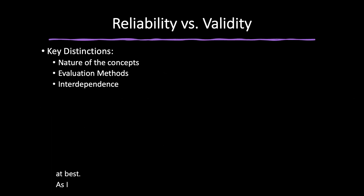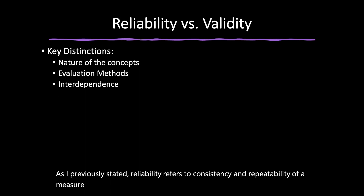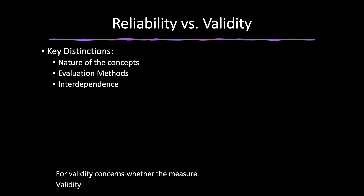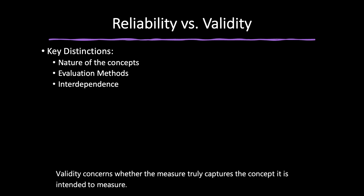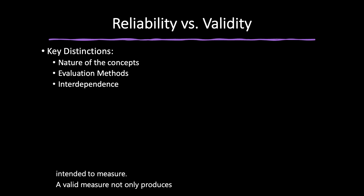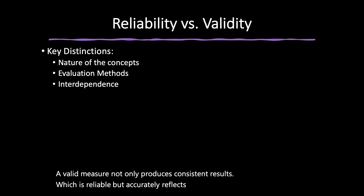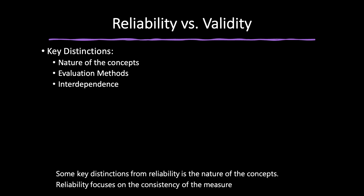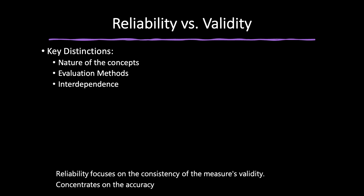Reliability refers to the consistency and repeatability of a measure — a reliable measure yields similar results across different instances or conditions. Validity concerns whether the measure truly captures the concept it is intended to measure. A valid measure not only produces consistent results, but accurately reflects the underlying construct. The key distinction is that reliability focuses on consistency, while validity concentrates on accuracy and appropriateness of the measure.